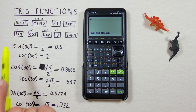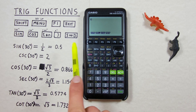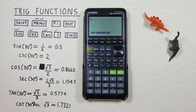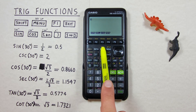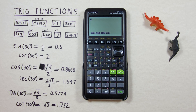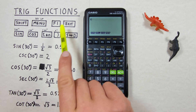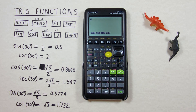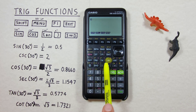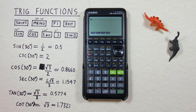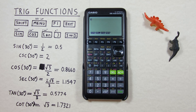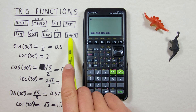To do this we'll use the shift key located here, the menu setup key located here, the F1 key located here, the exit key located here, the sine, cos and tan keys located across here, the right bracket key with the shift function of inverse located here, and the STD or conversion key located here.